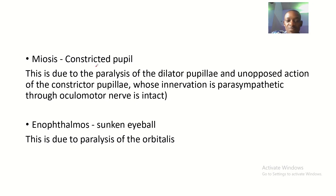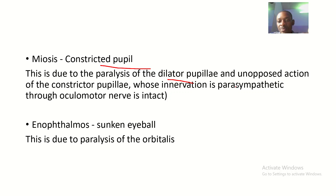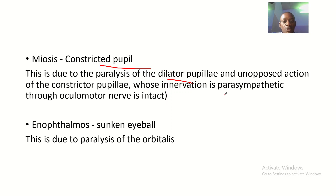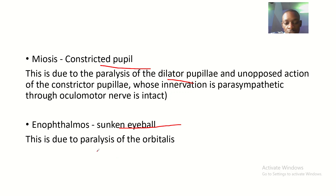Second, you have miosis — a constricted pupil — due to paralysis of the dilator pupillae. There is unopposed action of the constrictor pupillae, whose supply is parasympathetic through the oculomotor nerve. The constrictor pupillae remains intact because its supply is not T1 but the oculomotor nerve.